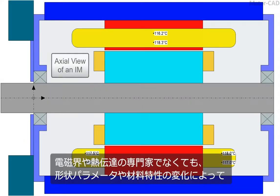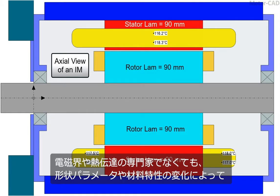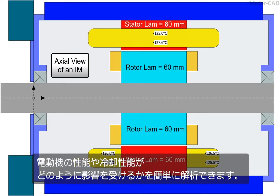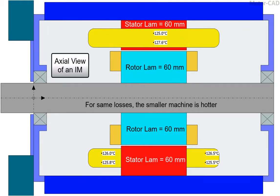With MotorCAD, even non-experts in electromagnetics or heat transfer can easily study how changes in geometric parameters and material characteristics affect machine performance and its cooling.